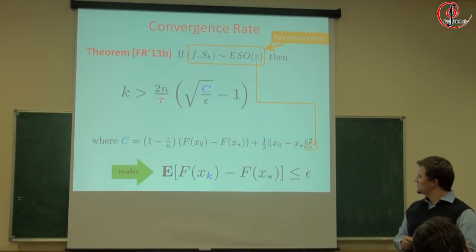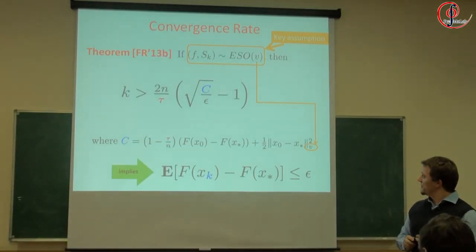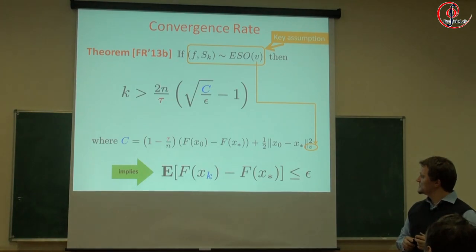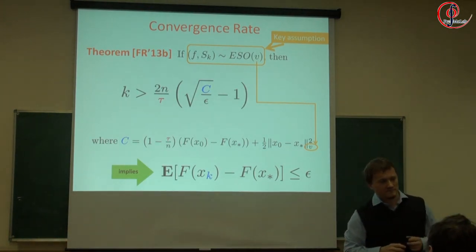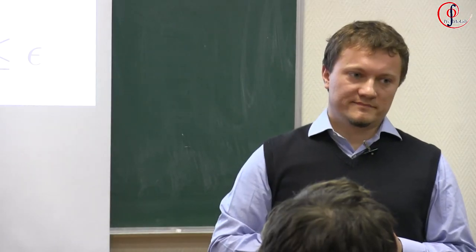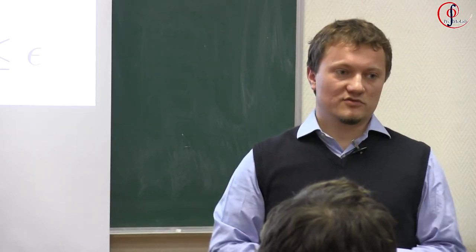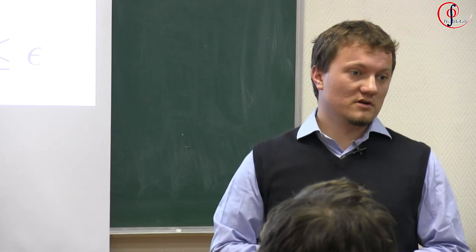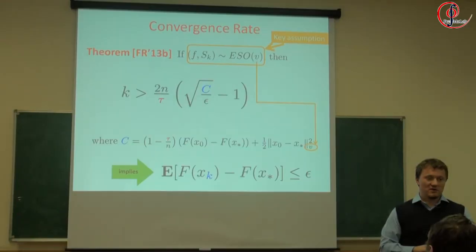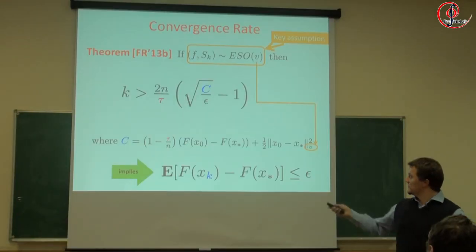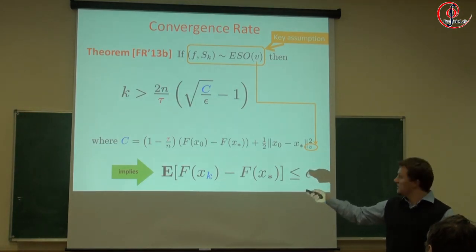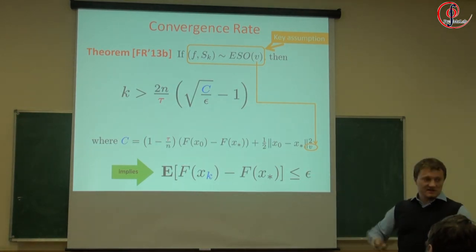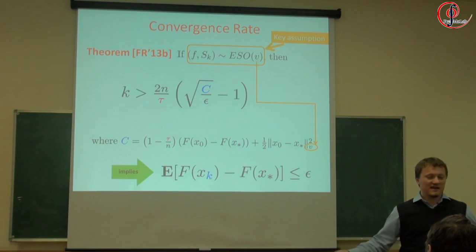If we consider a constraint optimization problem, the constant c can become a very large number because of the initial approximation argument — that's something you unfortunately always have to pay for. If tau is n, the distance to initial point term doesn't vanish, but this is what you usually have in gradient-type methods — you always have the initial distance and cannot avoid that.